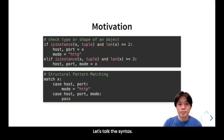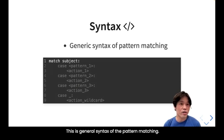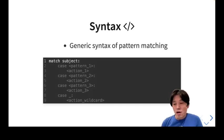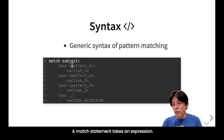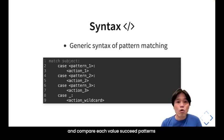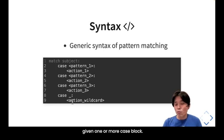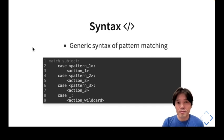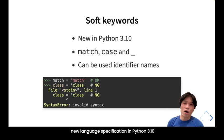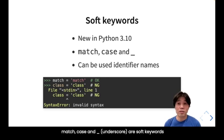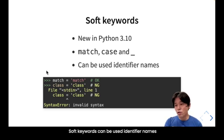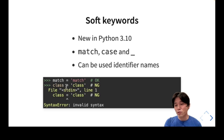Now let's talk about the syntax. A match statement takes an expression and compares its value to successive patterns given in one or more case blocks. Match, case, and underscore are soft keywords — a new language specification in Python 3.10. Soft keywords can be used as identifier names. For example, a variable named 'match' is valid, but 'class' is a reserved keyword, so using it as a variable name is invalid syntax.